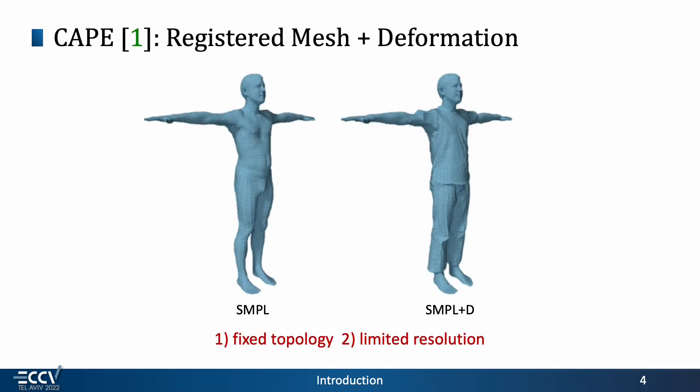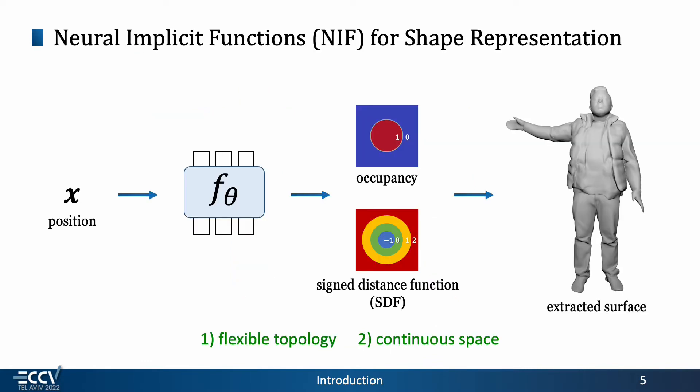CAPE registers point clouds with simple and overlays deformations but suffers from fixed topology and limited resolution. As a new trend in the community, the Neuroimplicit Function features a flexible topology and a continuous modeling space.